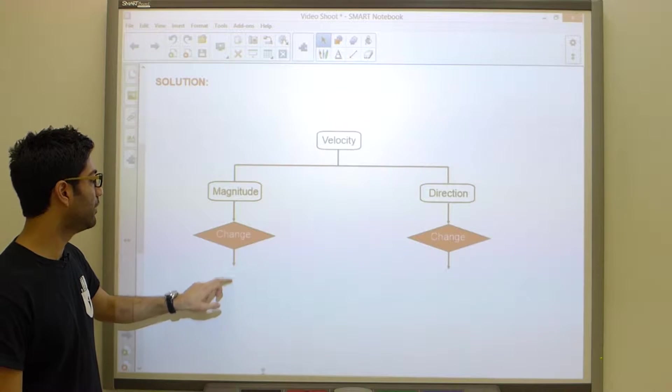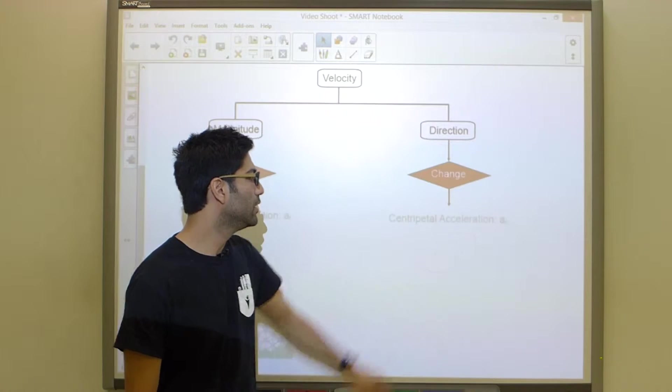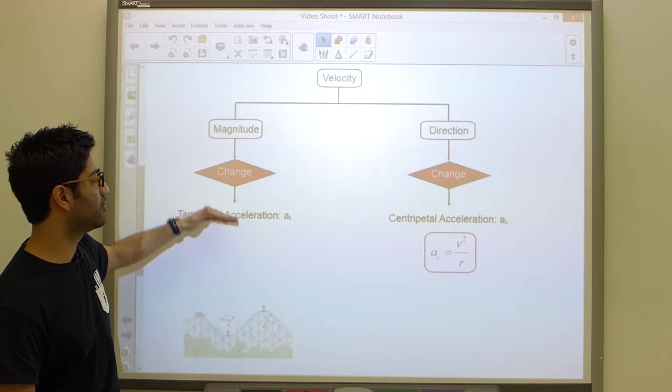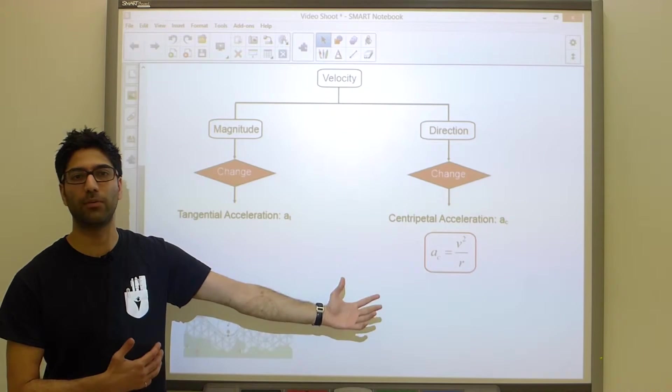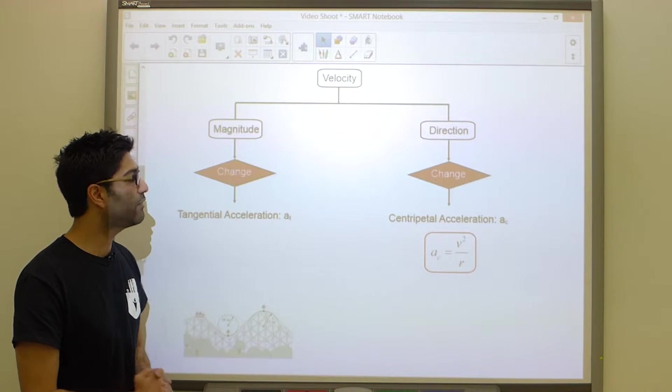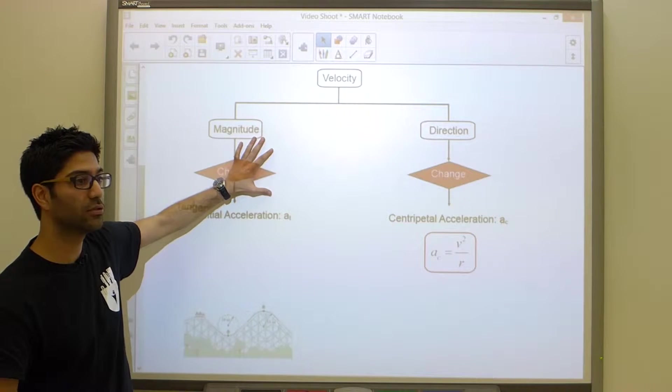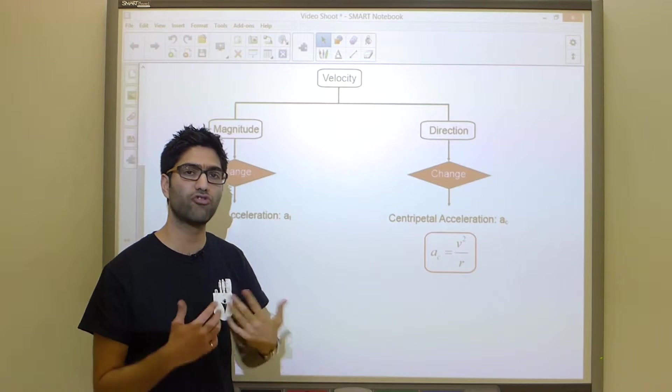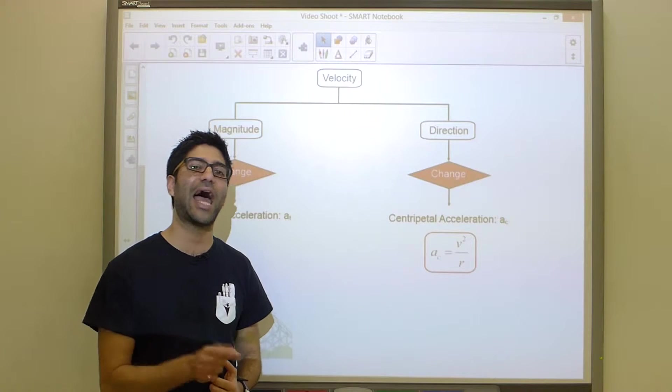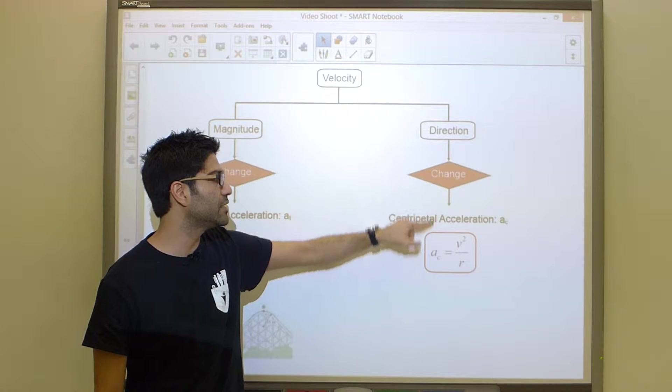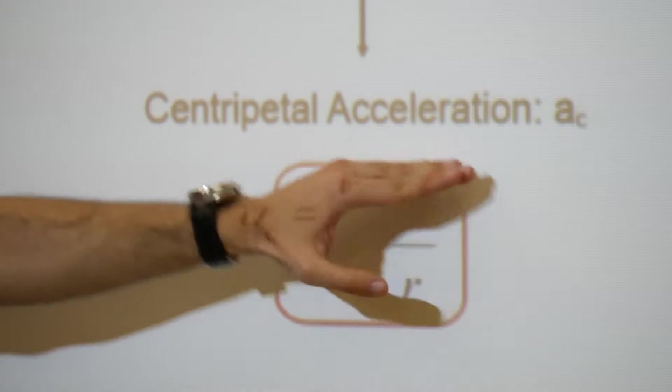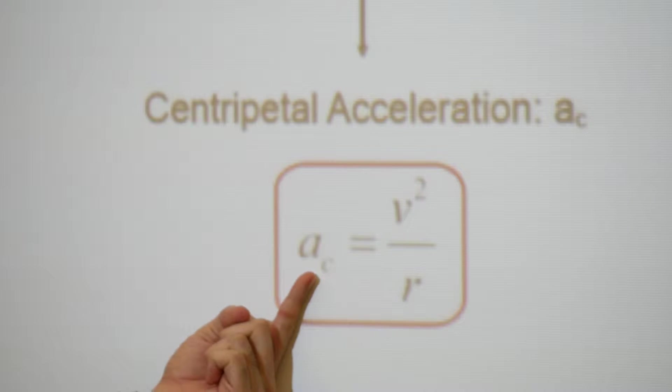If either the magnitude or direction changes, this gives rise to acceleration. If the magnitude changes, you have tangential acceleration - the acceleration we've been working with in our kinematics problems. However, it's possible that the magnitude does not change but the direction does. You can drive at the exact same speed and still have acceleration because your direction might be changing. If there's a change in direction, this gives rise to centripetal acceleration.